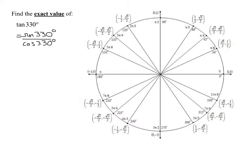And now we can just use our unit circle to find the sine of 330 degrees is the y coordinate. So that's negative one half and we're going to divide it by the cosine of 330 degrees which is the x coordinate which is the square root of 3 over 2.